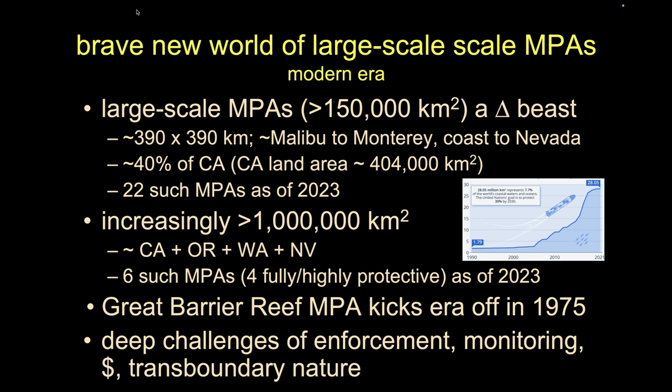As of last year, we have 22 of these large-scale MPAs around the planet, some more than a million square kilometers — that's bigger than California, Oregon, Washington, and Nevada combined. We have six of those right now, four of which are fully protected.